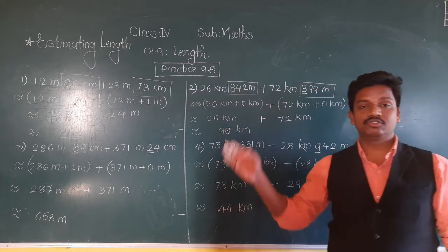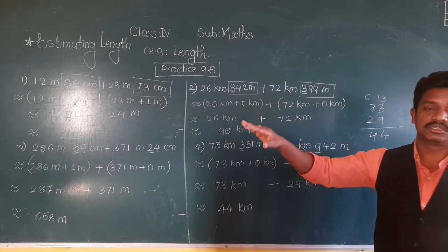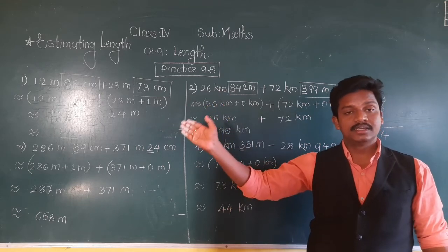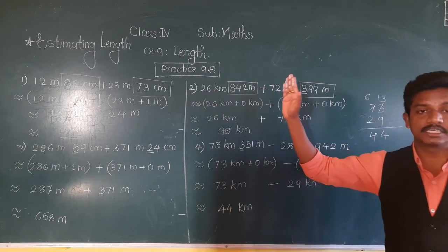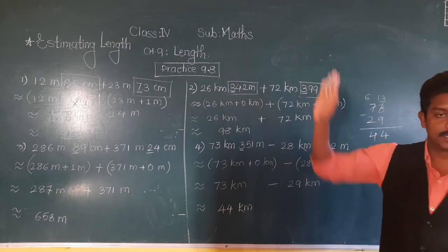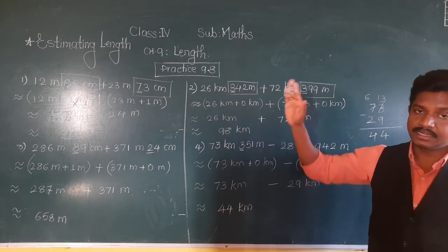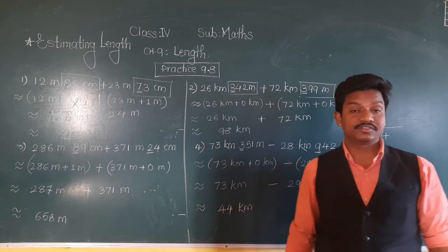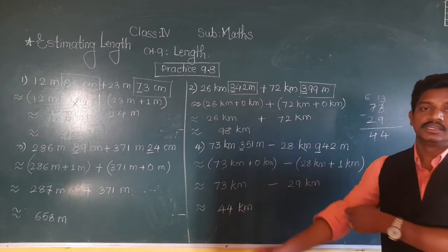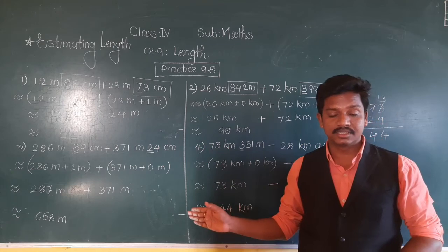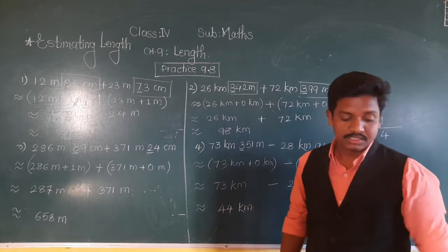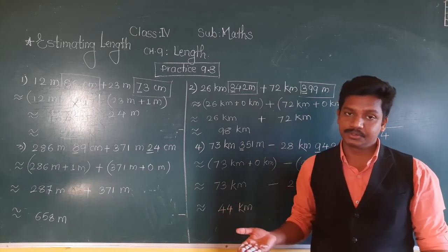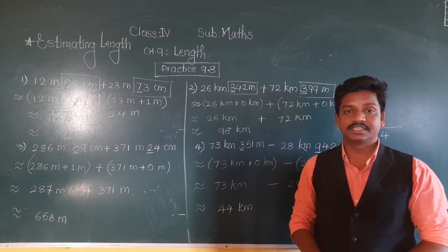So in this way, first round off the given length to the nearest meter or kilometer. If the length is given in meter and centimeter, round to the nearest meter. If given in kilometer and meter, round to the nearest kilometer. Follow the rule, and then add or subtract to find the sum or difference. I hope you have understood. Try to solve the remaining six examples in this practice today. Thank you and have a nice day.